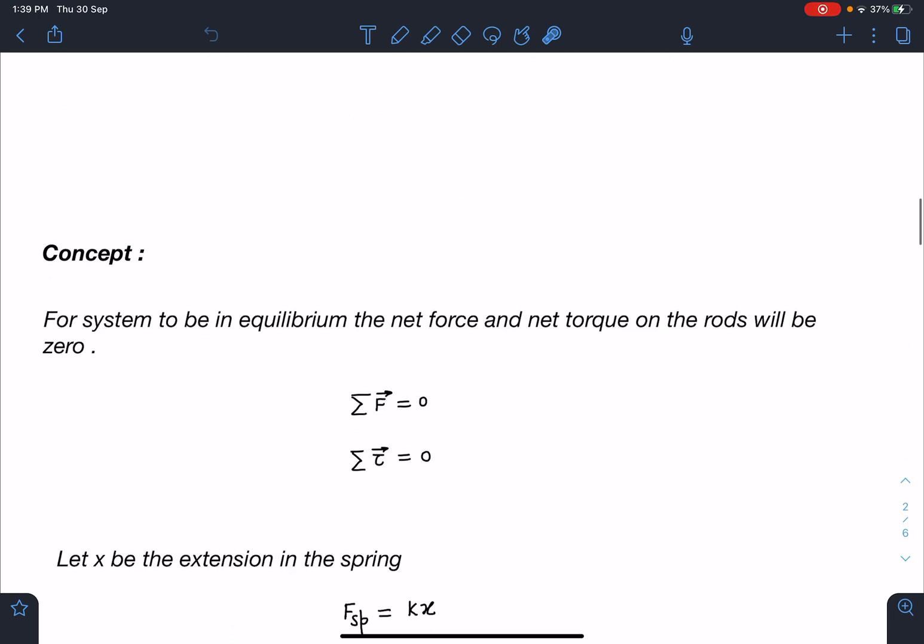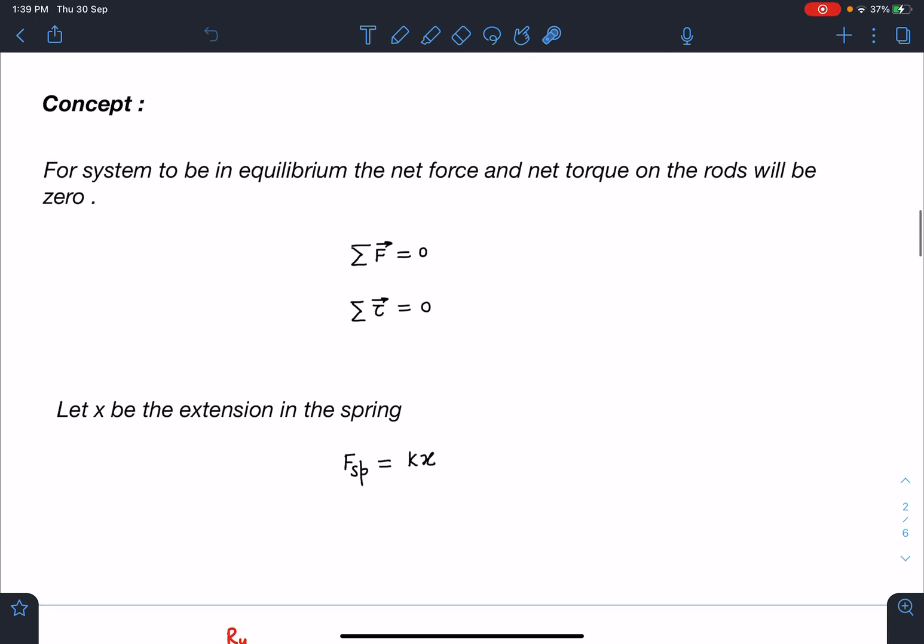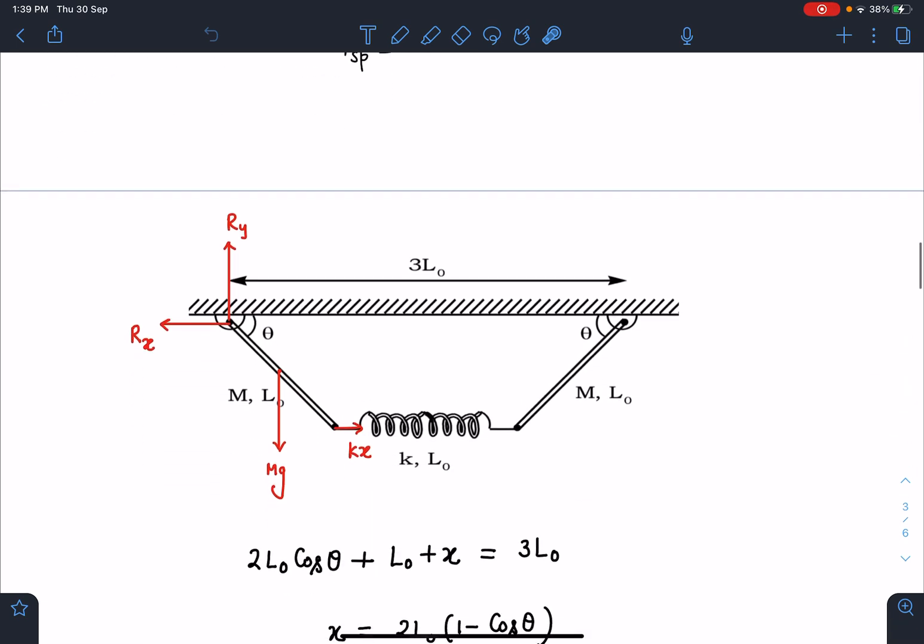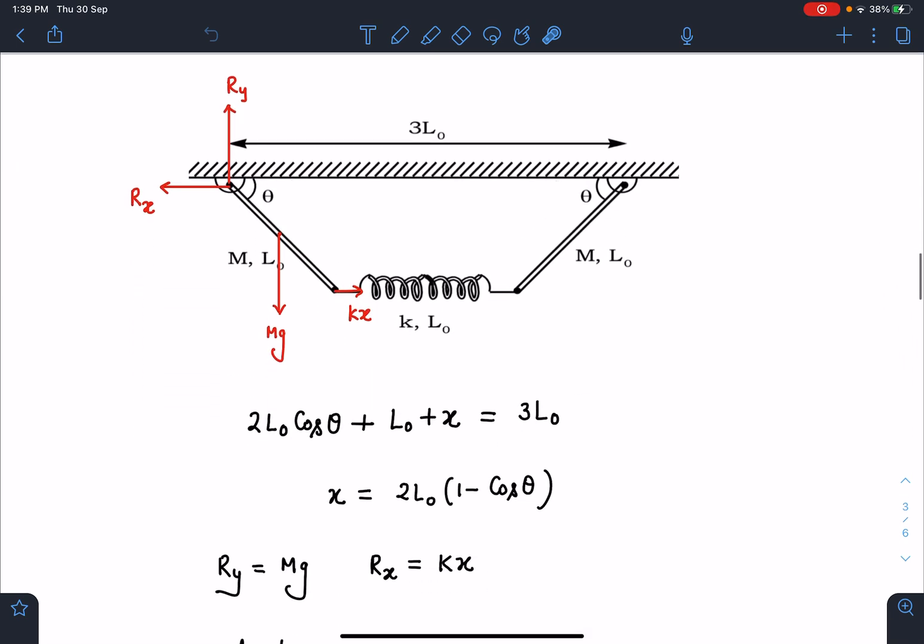Concept wise we can say for the system to be in equilibrium, net force and net torque about any point should be zero. And if x is the extension in the spring, I can write spring force as kx.